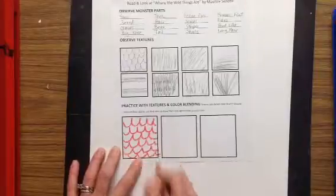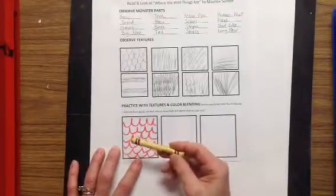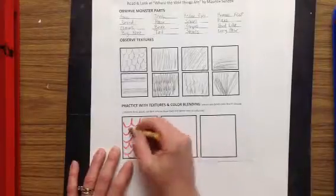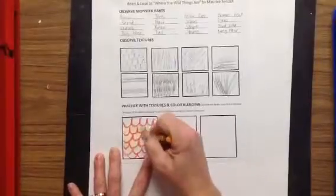I'm filling that whole shape in and I'm gonna pick this yellow color. It's called Un-Mellow Yellow and I'm gonna color right on the top of this texture.